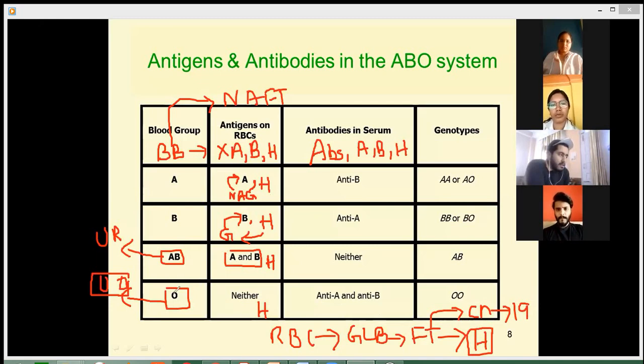Blood group O, please remember, has no A antigen, no B antigen, but has H antigen present.